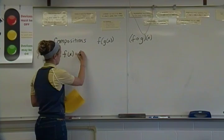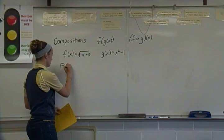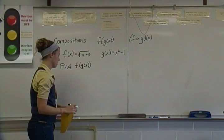So in this case, we're going to start off with an example. f of x is equal to the square root of x plus 3, and g of x is going to be x squared minus 1. And so we're going to find f of g of x. We're going to put the g function inside of the f function for this example.